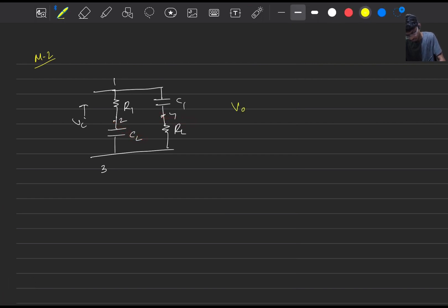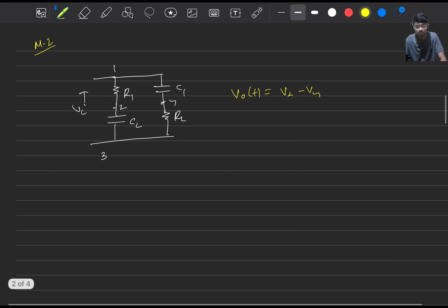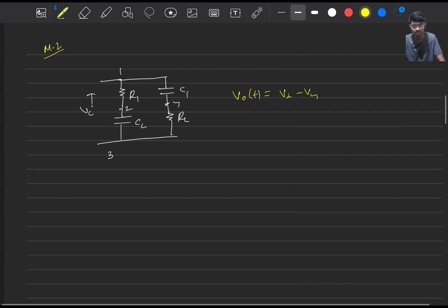And we're taking the output from this two and four, that is V naught of t equals V2 minus V4. So if we find out the V2 voltage node 2 voltage and node 4 voltage and subtract those two, then we will easily get to know the output waveform.